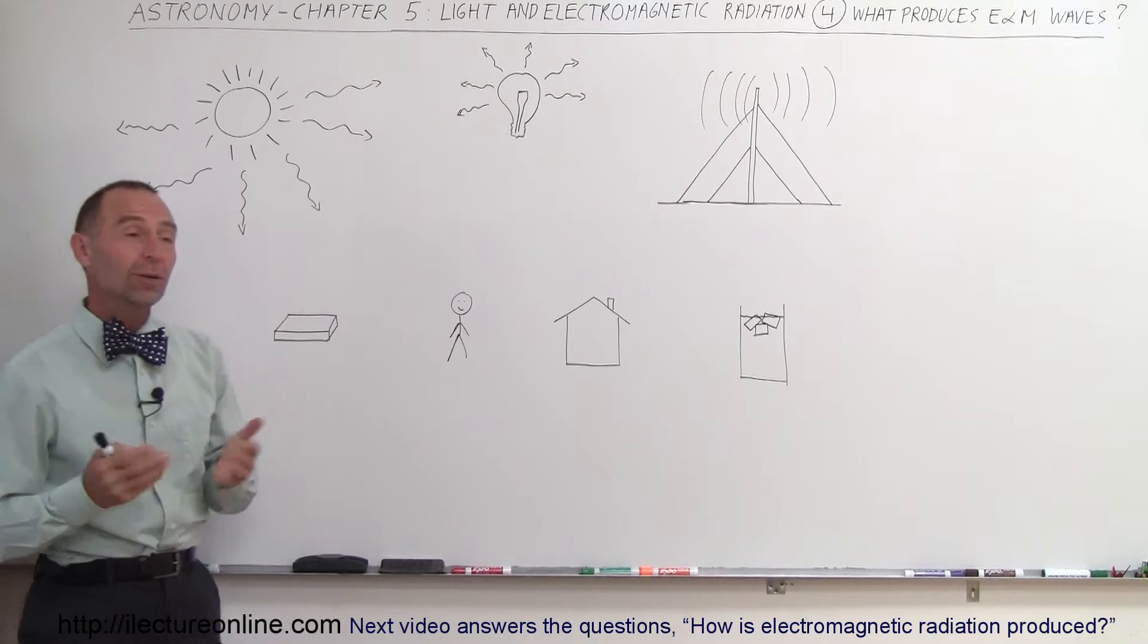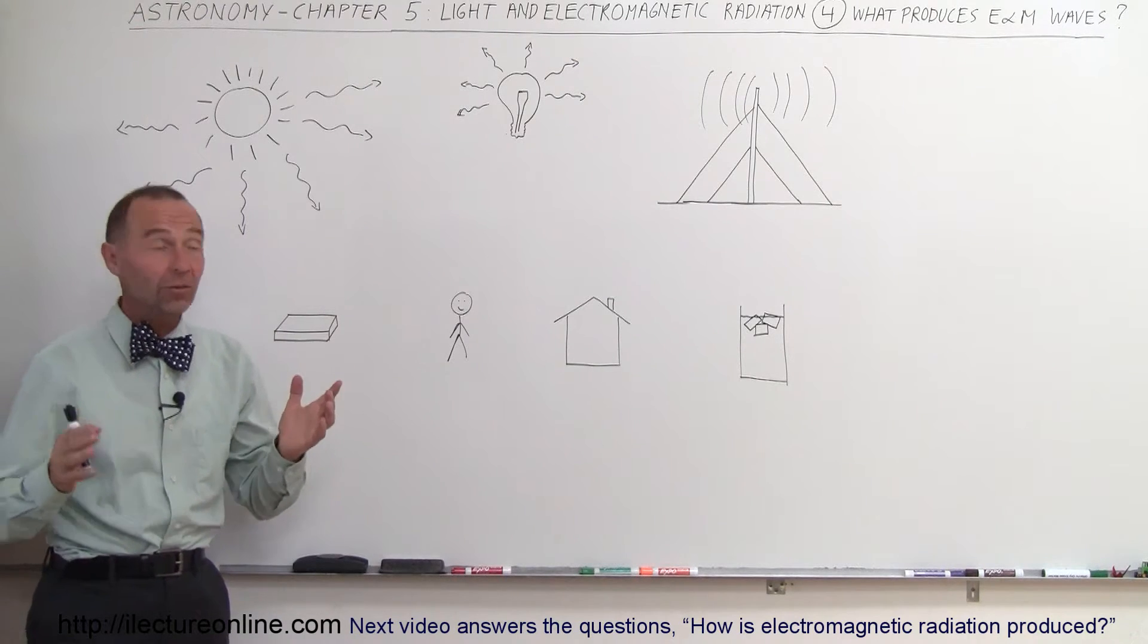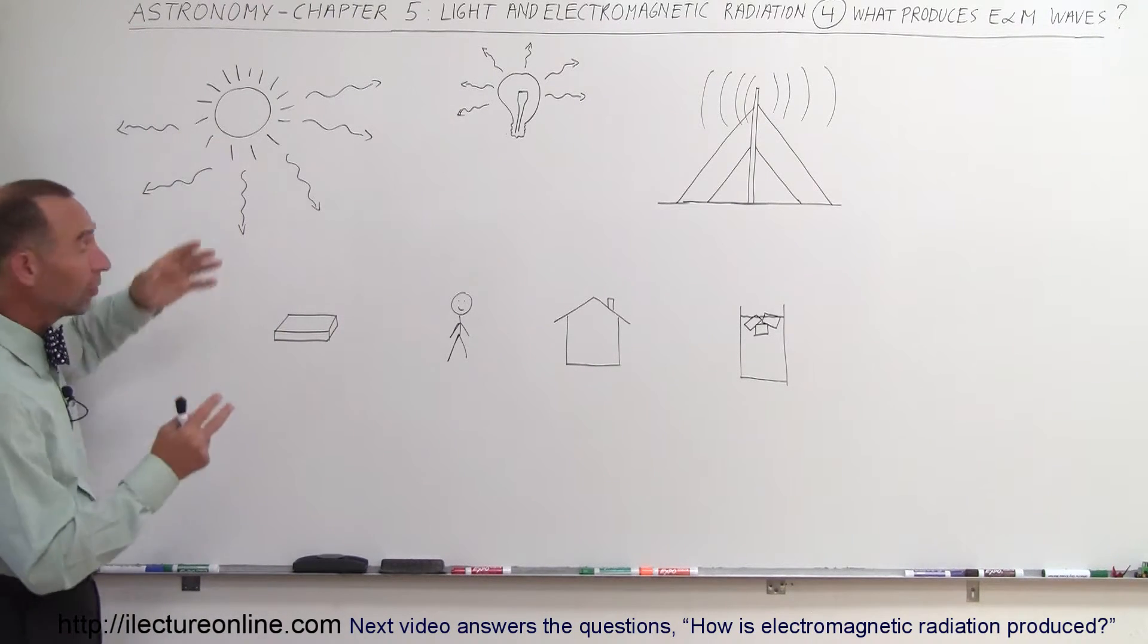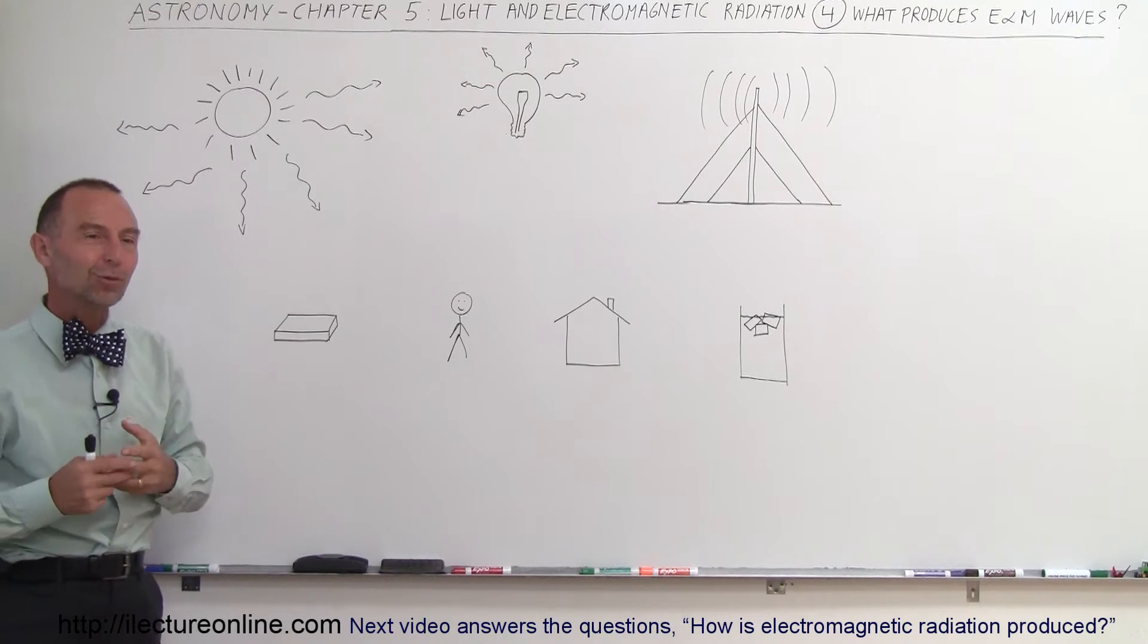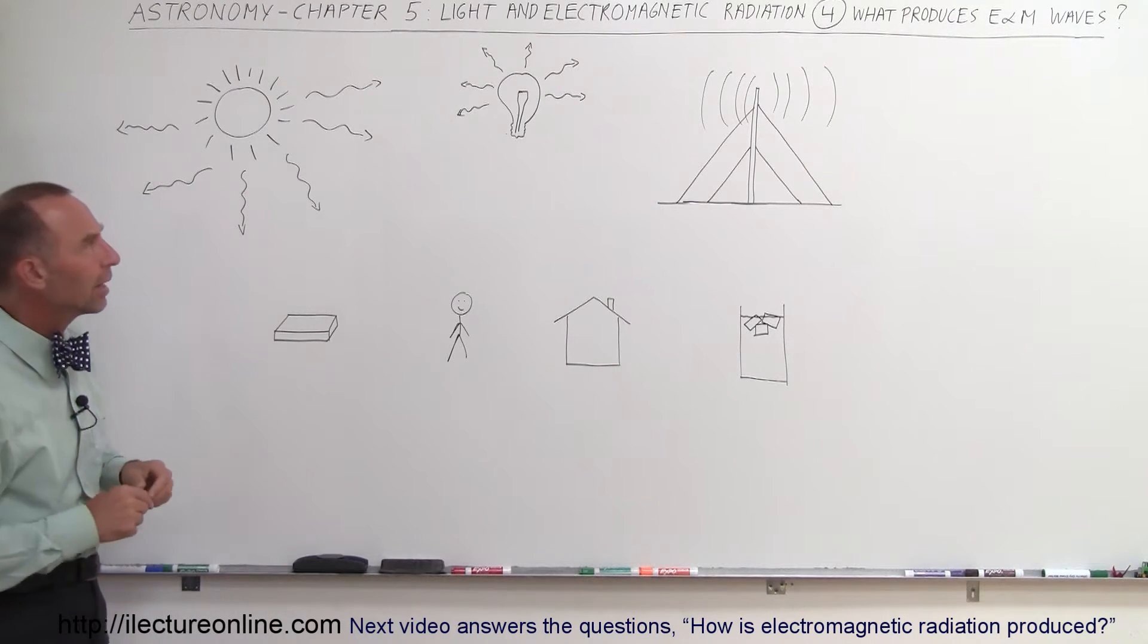Well, the answer usually comes to, oh the sun does, and you're indeed correct. The sun produces electromagnetic radiation, it produces ultraviolet radiation, visible light and infrared radiation.